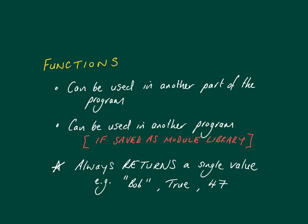In that instance it can be imported into another program. But the main thing is that functions always return a single value. By that I don't mean a decimal - I mean a single variable, a single data type. So it could be a string like 'Bob', or it could be the Boolean value true, or it could be 47, or it could be a character or a real number. A function always returns one value to the calling code.